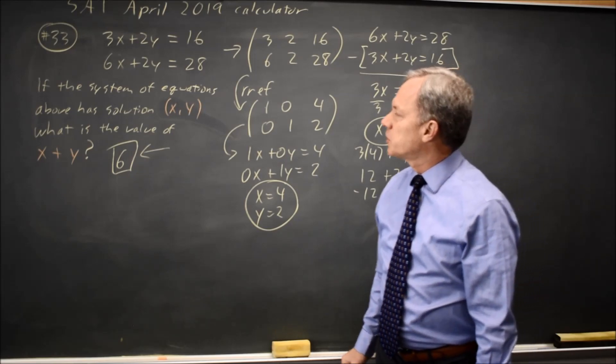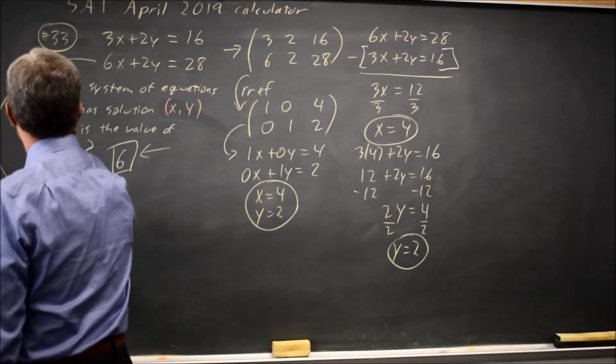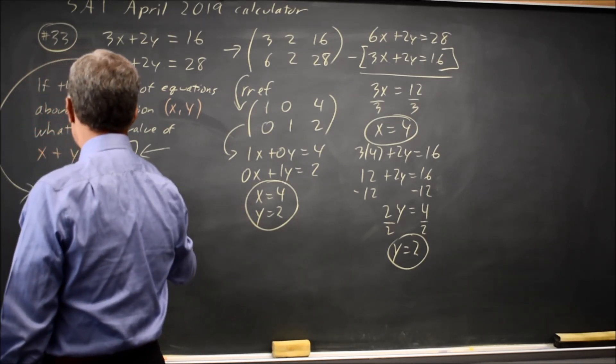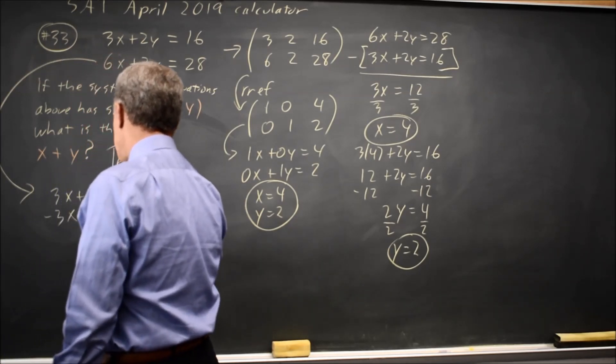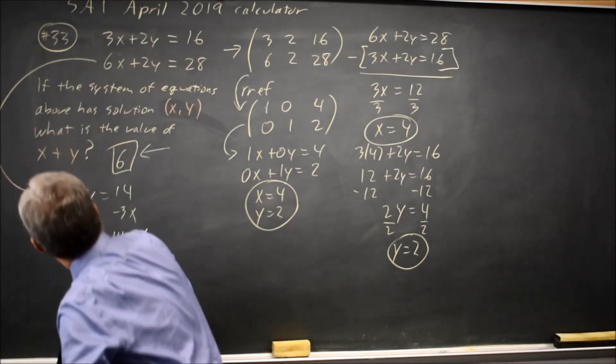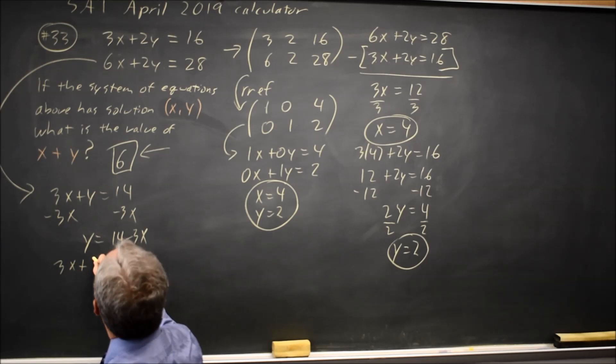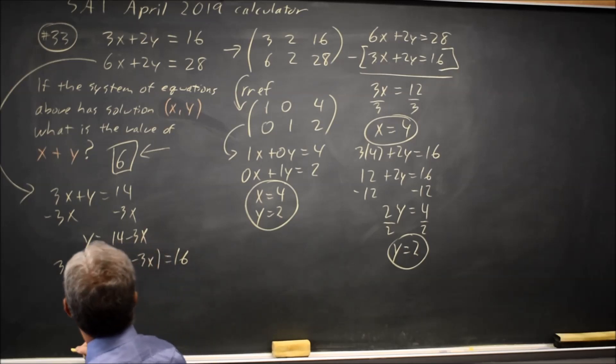We have other methods. We could solve either one of these for y. For example, if I divide through by 2, I get 3x plus y equals 14. Subtract 3x. Y equals 14 minus 3x. And then I can substitute that into my first equation.